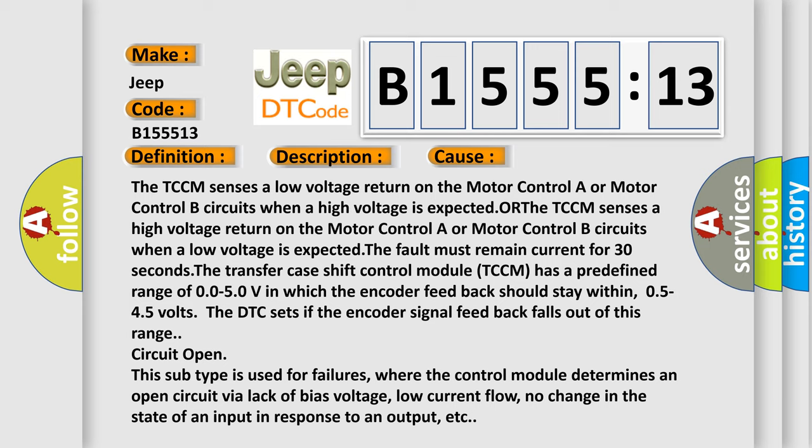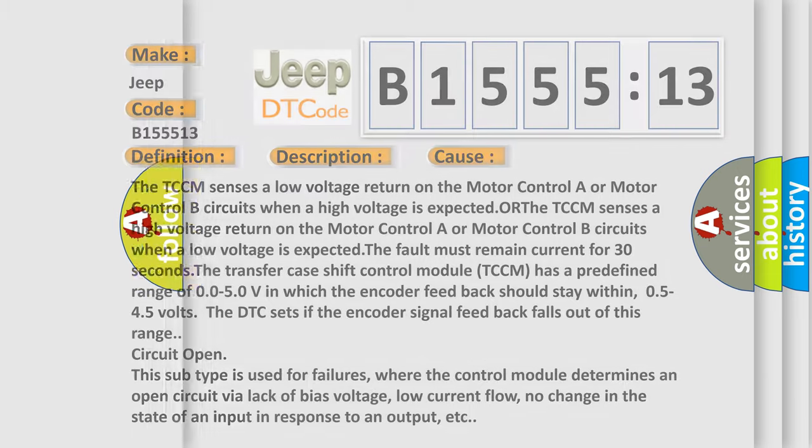This subtype is used for failures where the control module determines an open circuit by a lack of bias voltage, low current flow, no change in the state of an input in response to an output, etc.